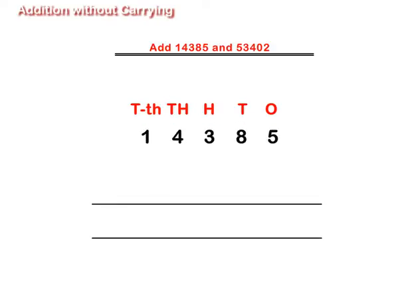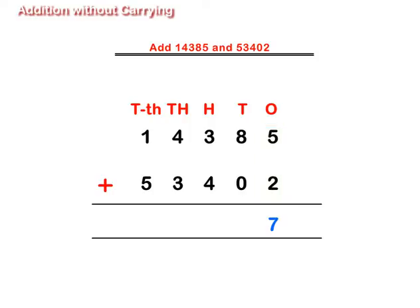We shall start with arranging the given numbers in columns as shown on the screen. Adding the numbers first at the 1's place, we get 5 plus 2 is equal to 7. Then adding numbers at the 10's place, we get 8 plus 0 is equal to 8.